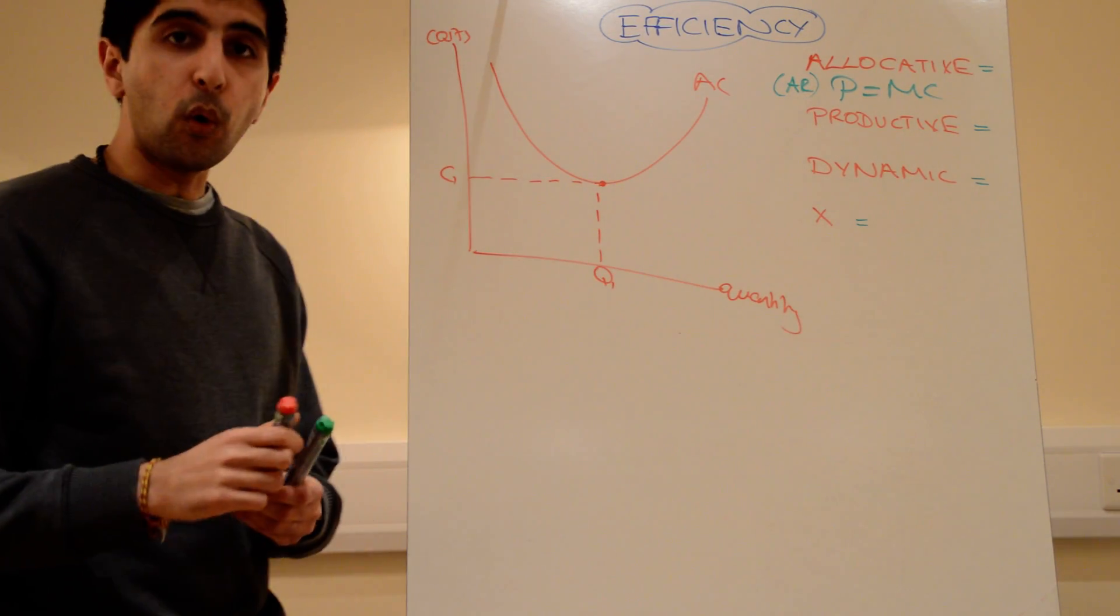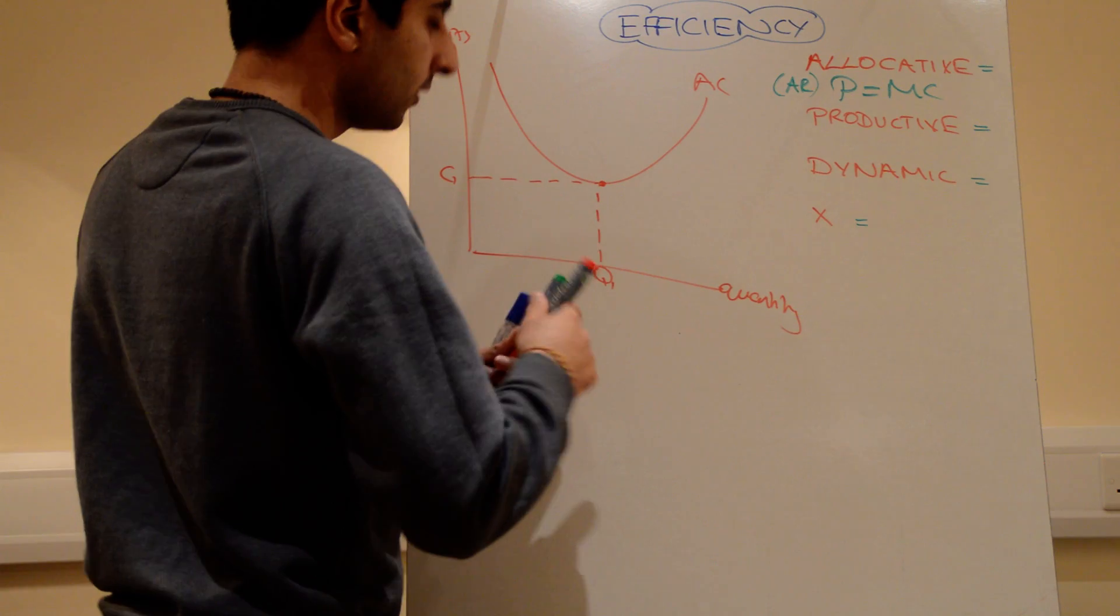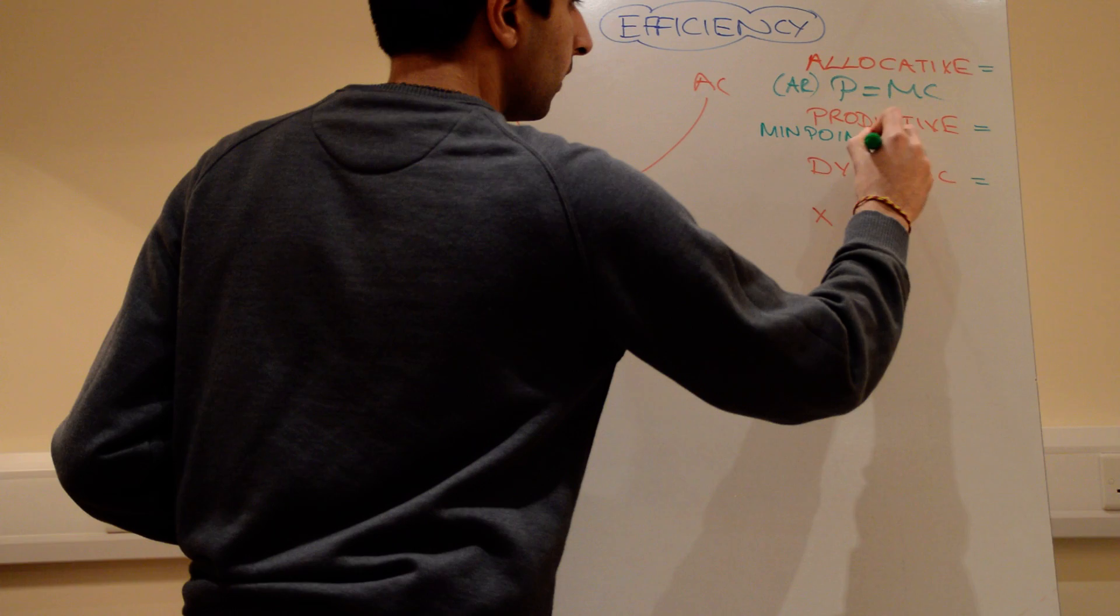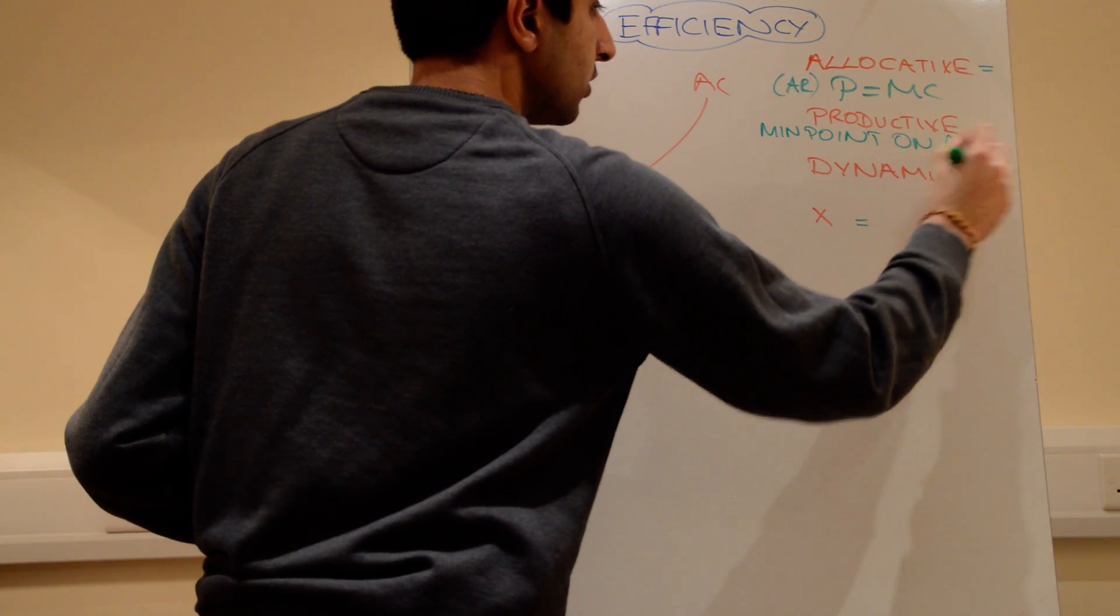So, productive efficiency, all you need to know is that occurs at the minimum point on the average cost curve.